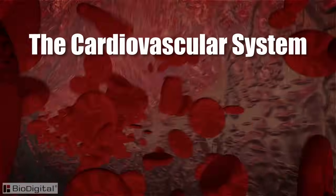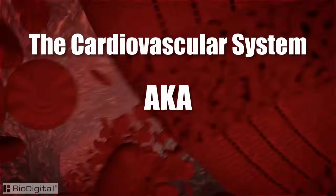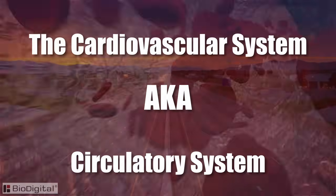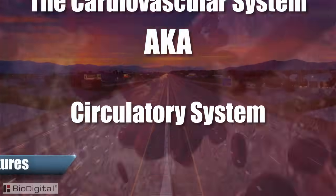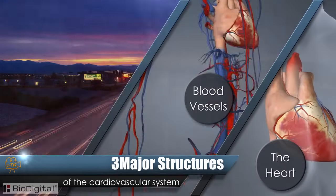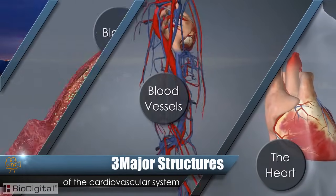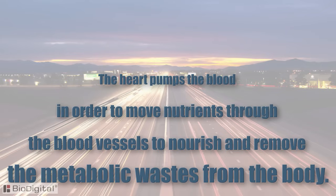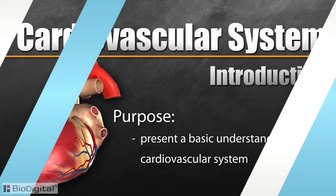The cardiovascular system, also called the circulatory system, is the transportation system of the body. The major structures that make this possible are the heart, blood vessels, and blood. Simply put, the heart pumps the blood in order to move nutrients through the blood vessels to nourish and remove the metabolic waste from the body.